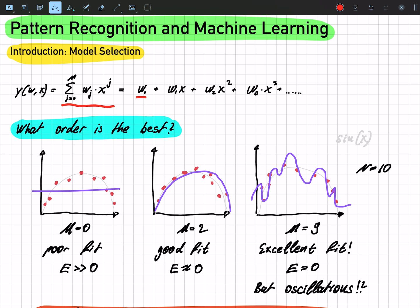Then we have w1 times x to the power of 1, and we basically continue until we finish with wm times x to the power of m.